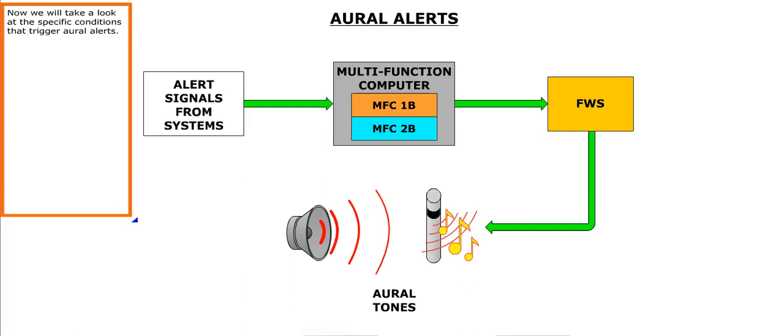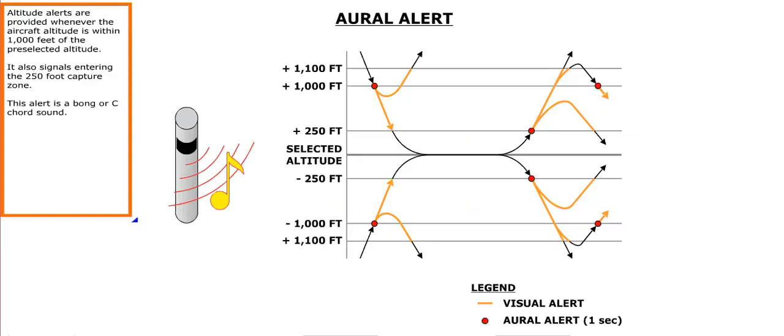Now we will take a look at the specific conditions that trigger all alerts. Altitude alerts are provided whenever the aircraft altitude is within 1,000 feet of the preselected altitude. It also signals entering the 250-foot capture zone. This alert is a bong or C-chord sound.